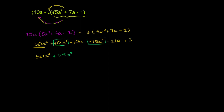We also have two a terms: negative 10a and negative 21a. Negative 10 minus 21 is negative 31a. And then finally, we only have one constant term — this positive 3. So plus 3. And we are done.